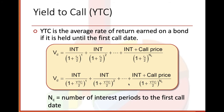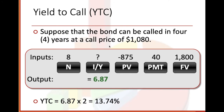For yield to call: suppose the bond can be called in four years at a call price of $1,080. Our N value is 8 (four years times 2). Interest is 6.87%, which is really good. Present value is $875, payment = $40. When we get 6.87% times 2, we get 13.76% in a calendar year.